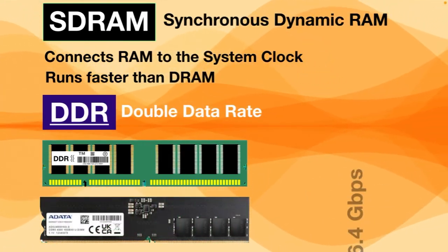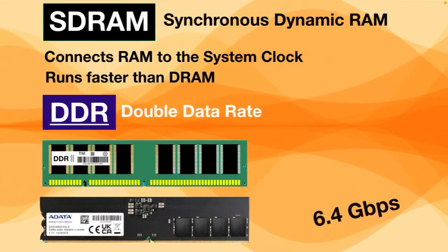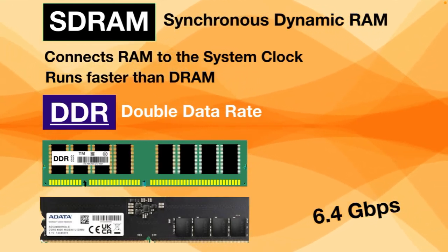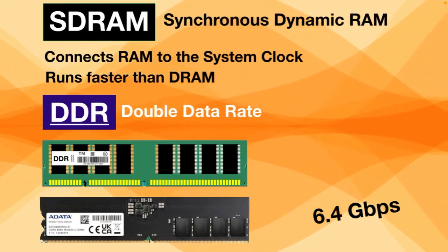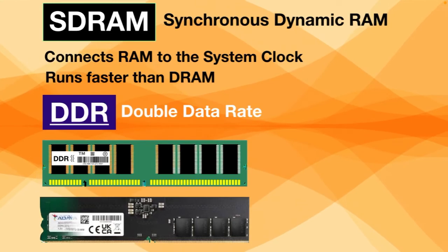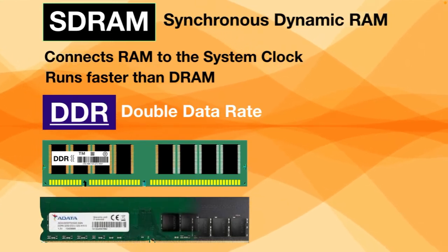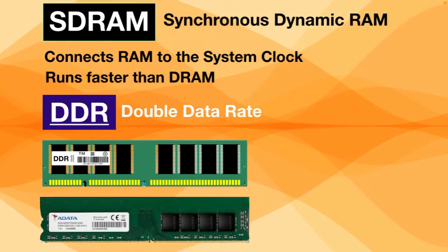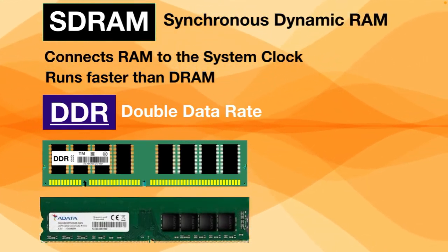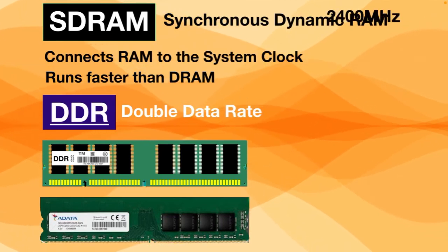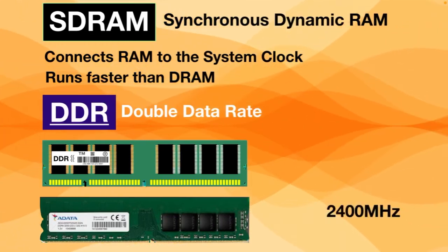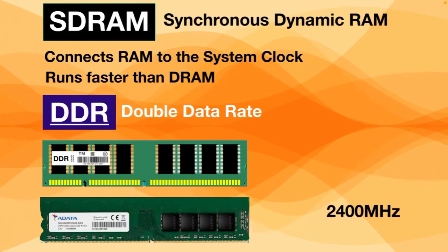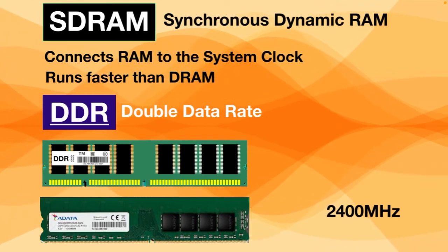The latest version, DDR5, can achieve data rates up to 6.4 gigabits per second, but it is very expensive. The most commonly used RAM is still DDR4, which comes in multiple types and speeds and generally provides above 2400 megahertz speeds.